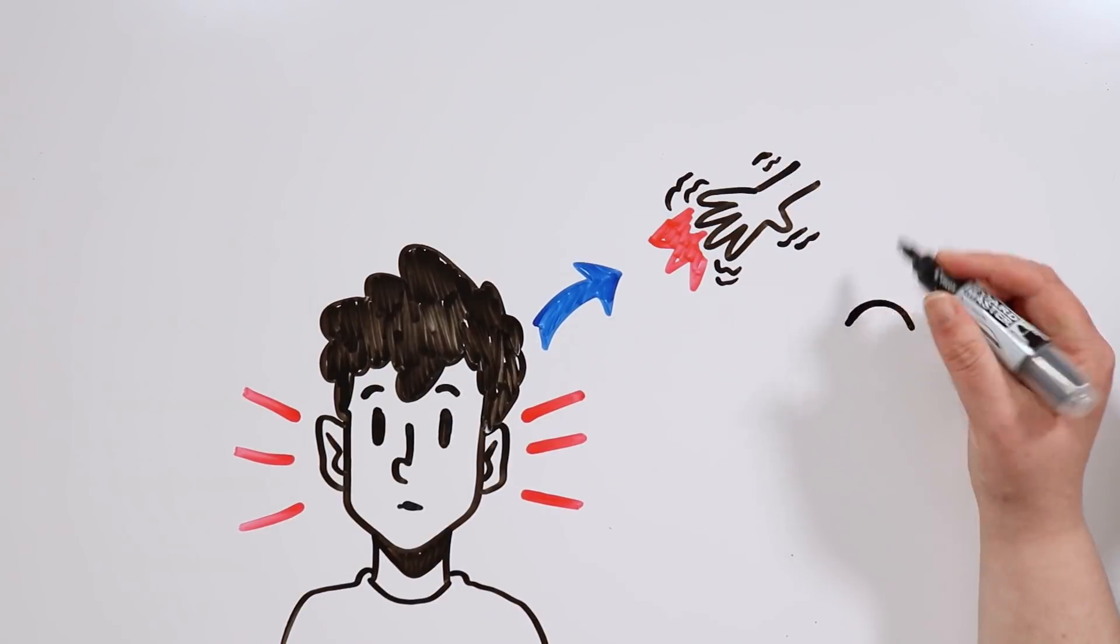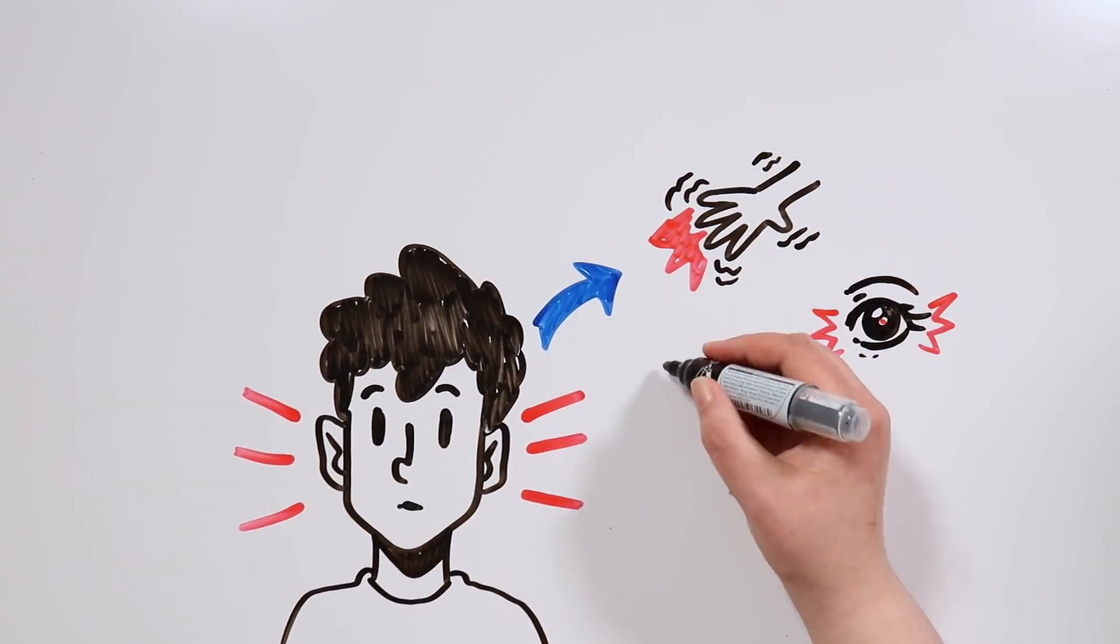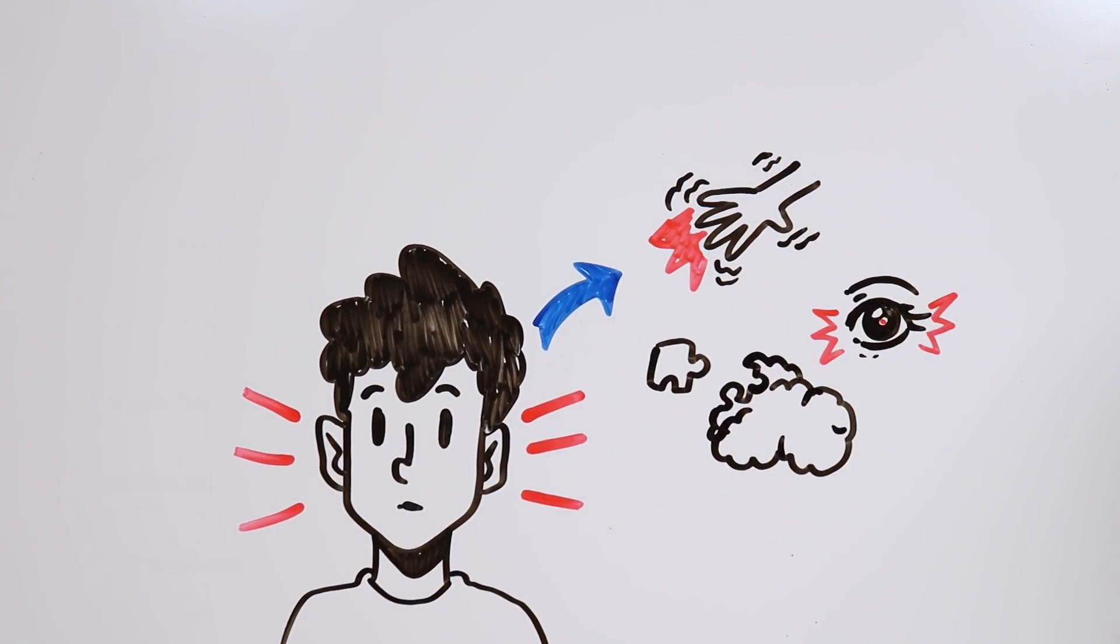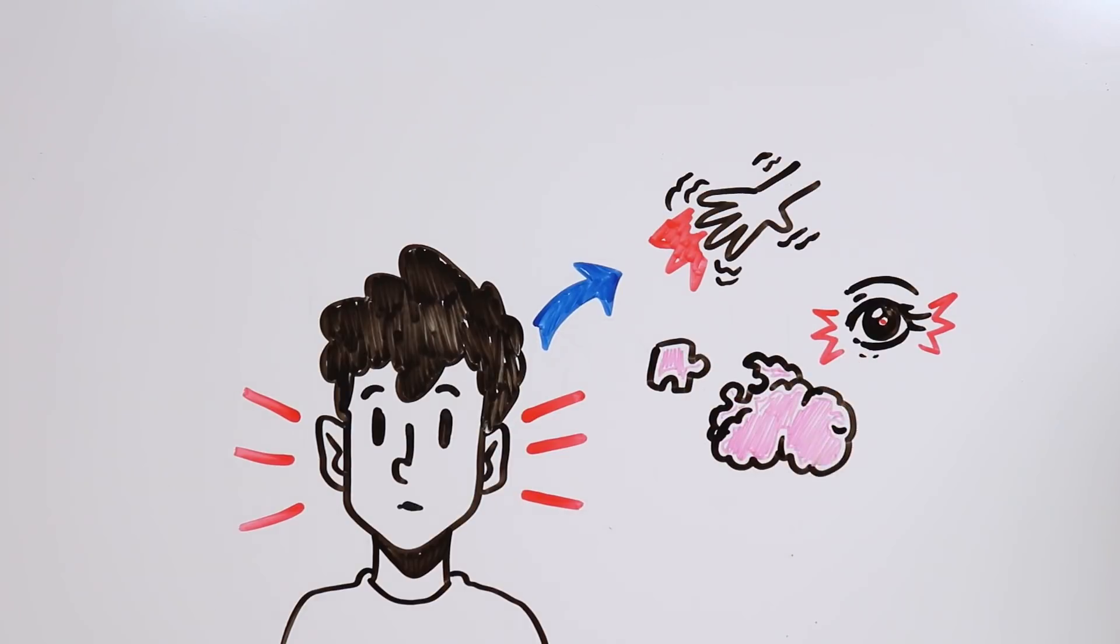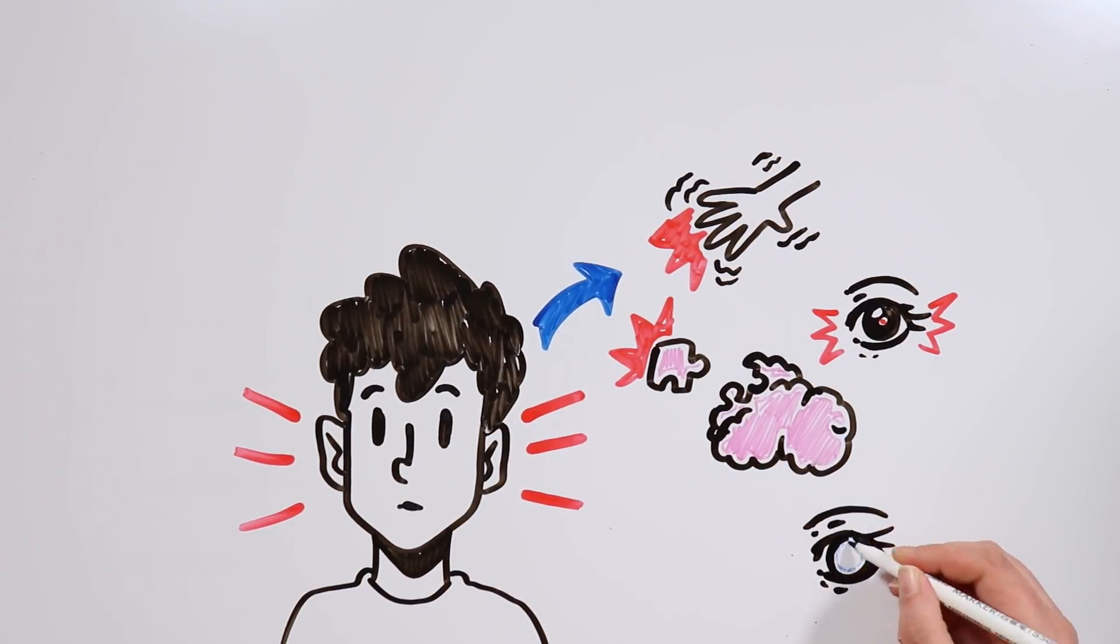Color blindness is hereditary, but other disorders exist which can produce similar effects, such as Parkinson's, glaucoma, Alzheimer's, and cataracts.